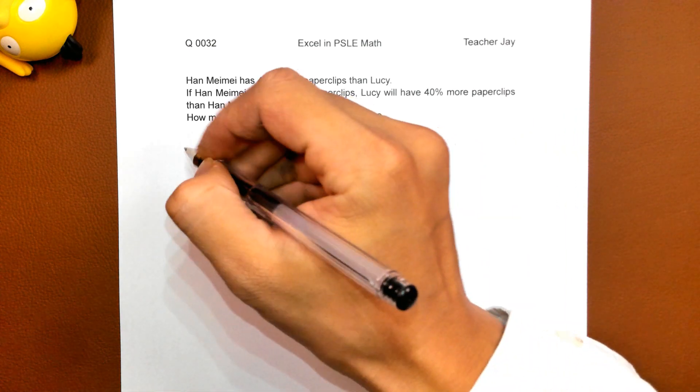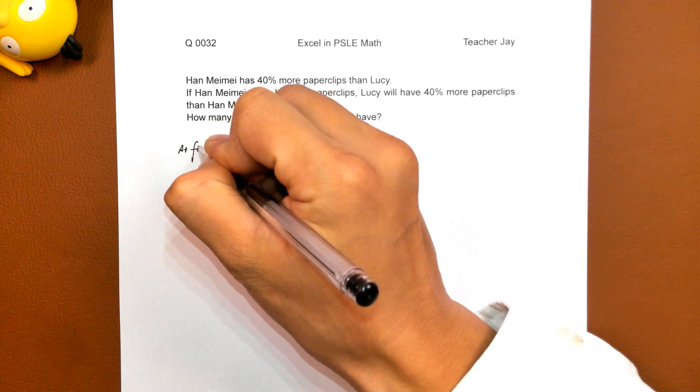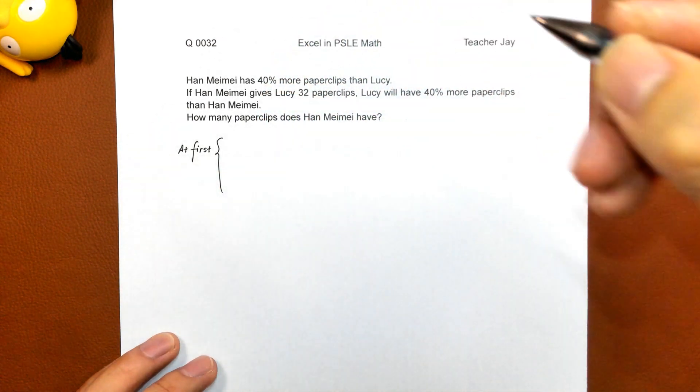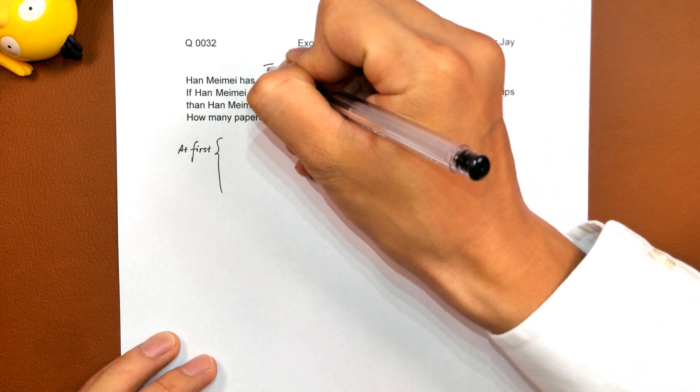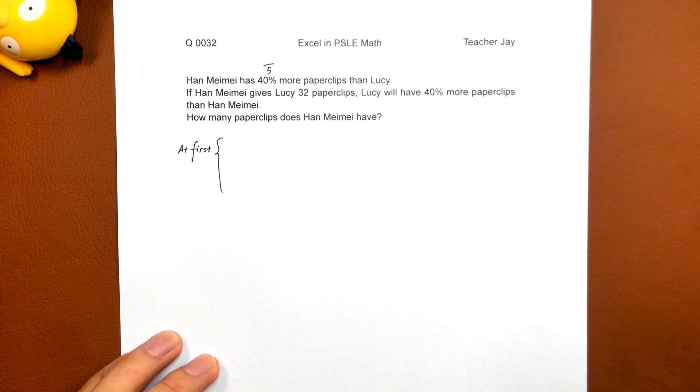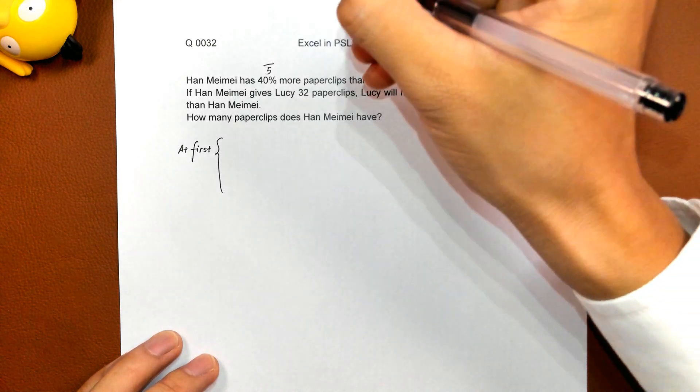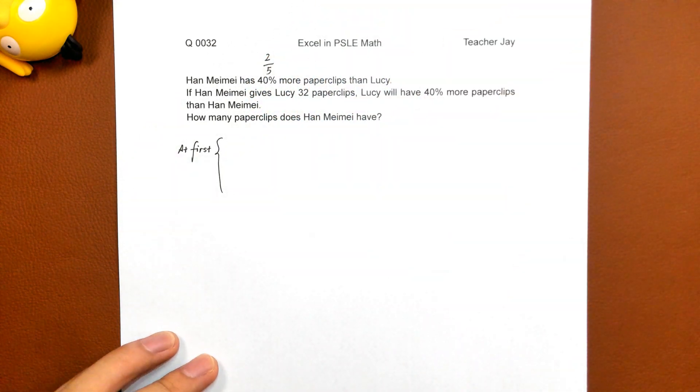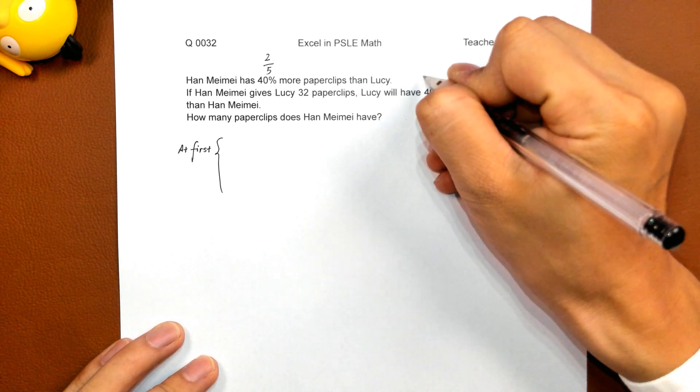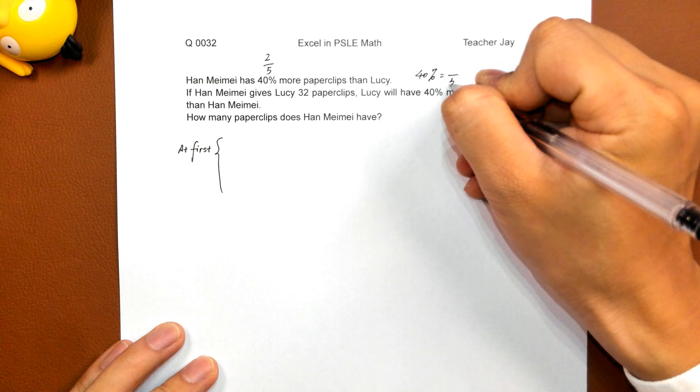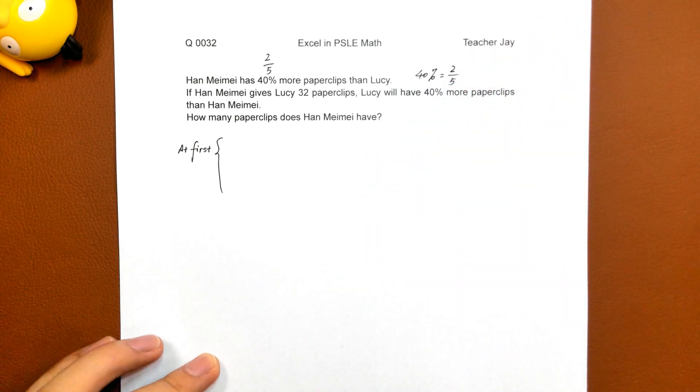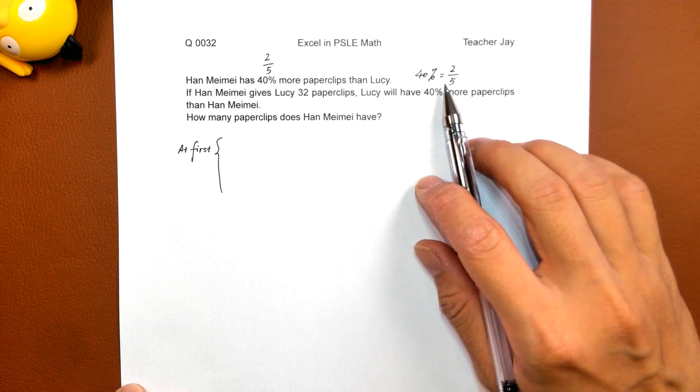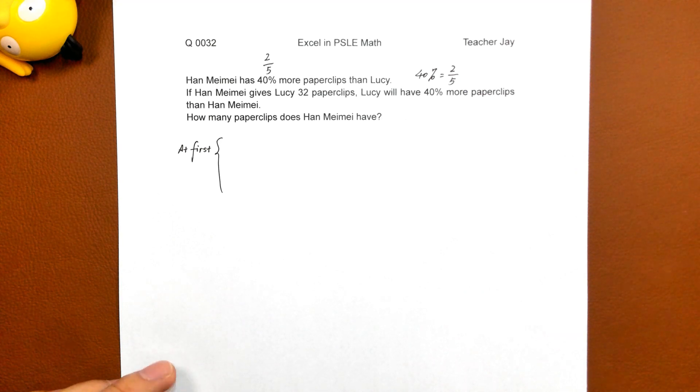So, at first, as we can see, 40% more. That means if Lucy had 5 units of paper clips, then Han Mei Mei will have 2 more units than Lucy. We change 40% to the fraction which is 2 over 5. We must be familiar with this conversion between percentage and fraction.